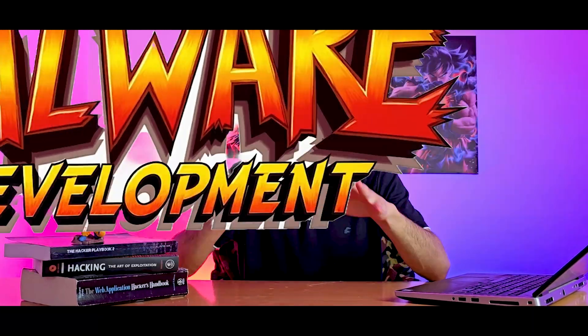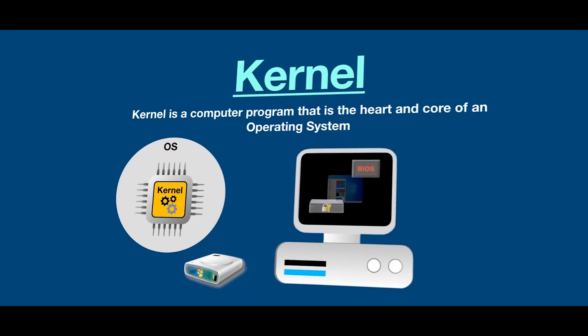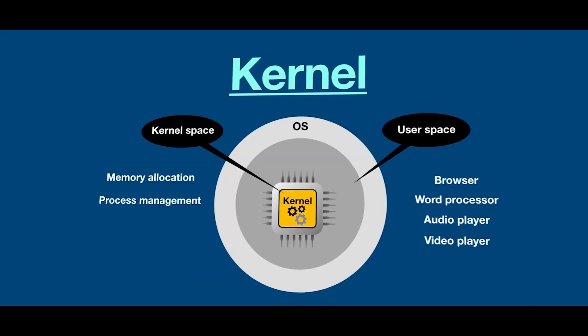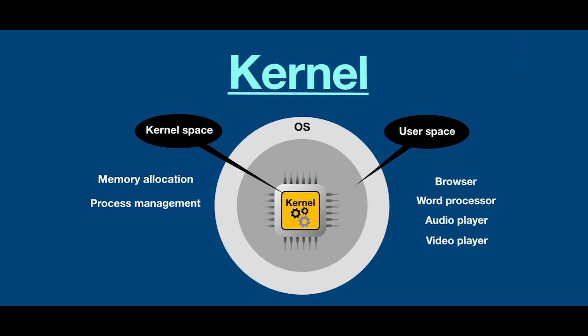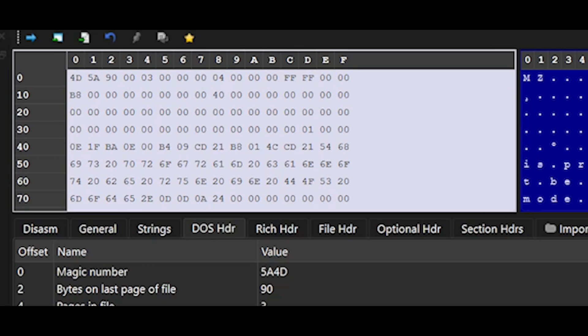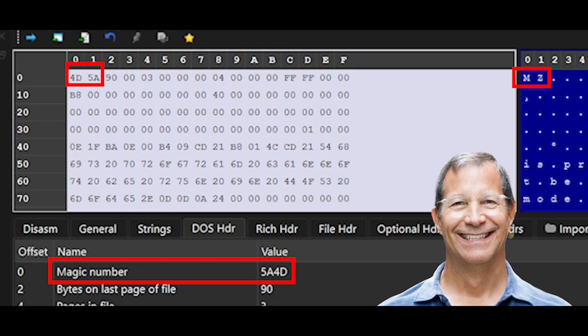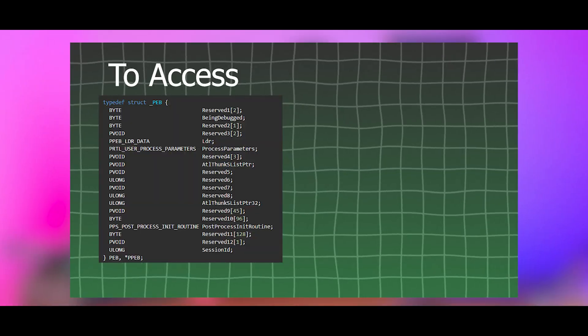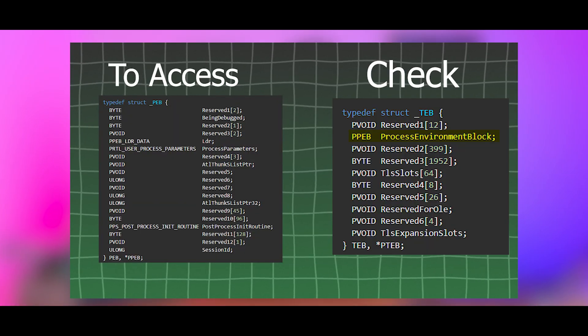Here's what we're going to cover in the Malware Development with C++ course. First, we begin by explaining how the Windows operating system works under the hood — like processes, memory, and system calls. Then we move on into understanding the PE file format, the portable executable, and how imports are resolved. Also, navigating internal structures like the thread and the process environment block.